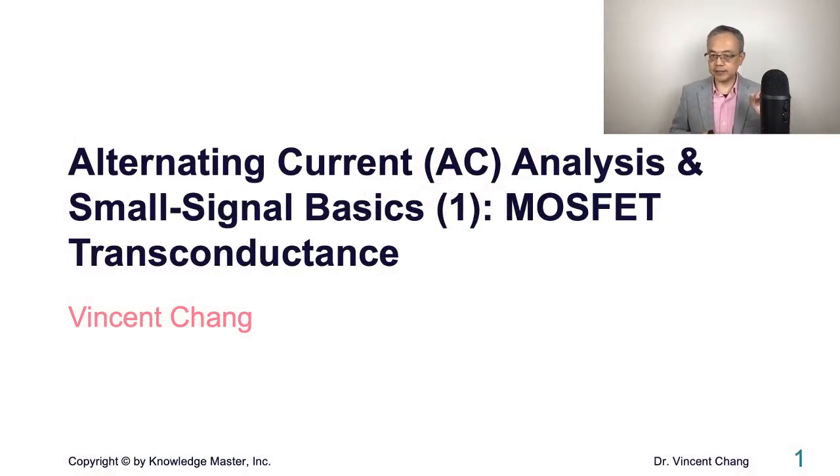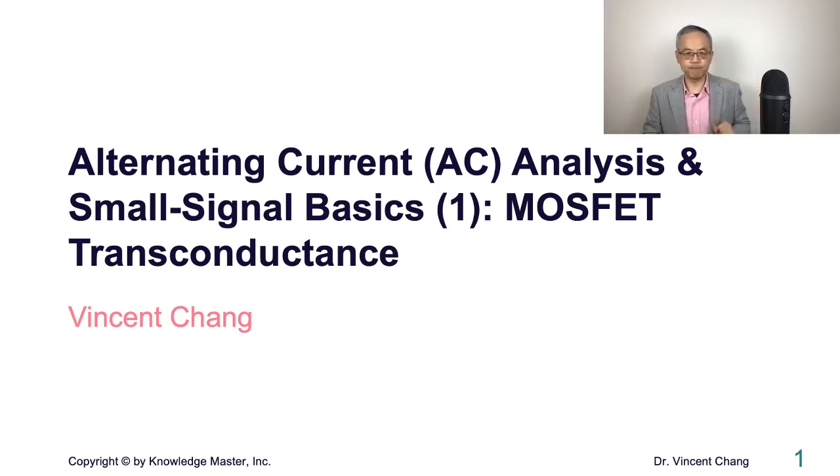Alternating current AC analysis and small signal basics part one. There are three lectures around this topic: AC analysis and small signal basics, MOSFET transconductance in the next one, I'm going to talk about the BJT's transconductance, and the third lecture is going to be the key concept around the AC analysis. Some of the puzzles that most engineers or students are struggling with will be unveiled in the third lecture.